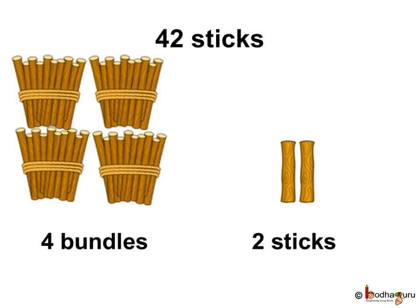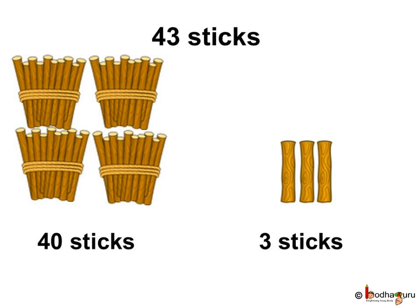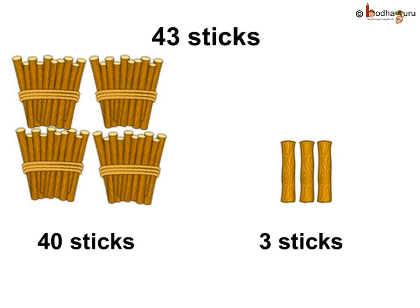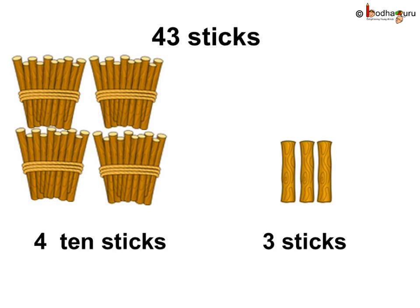It is 42 sticks. Same way, 4 bundles and 3 sticks is 40, 41, 42, 43. It is 43 sticks. Thus 43 sticks means 4 tens and 3.